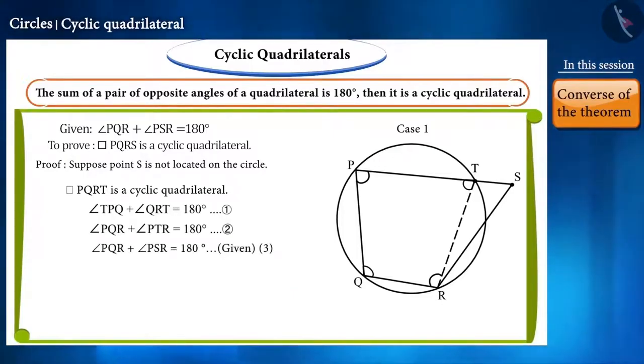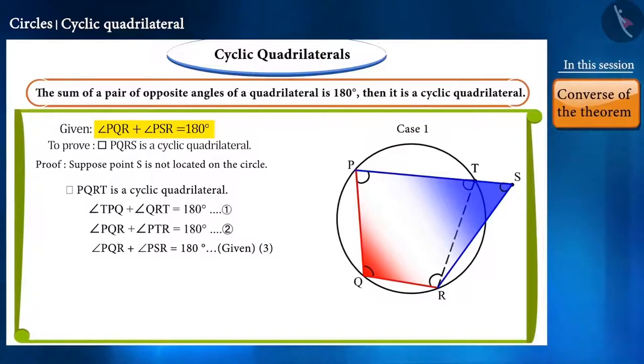And the sum of the angle PQR and angle PSR is given as 180 degrees. We assume this as equation 3. Now, observe the equations 2 and 3 carefully.